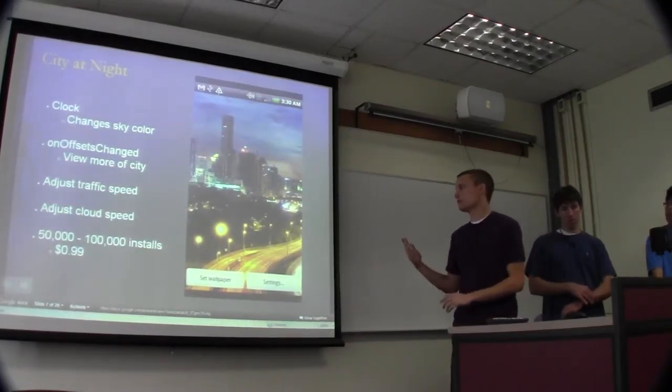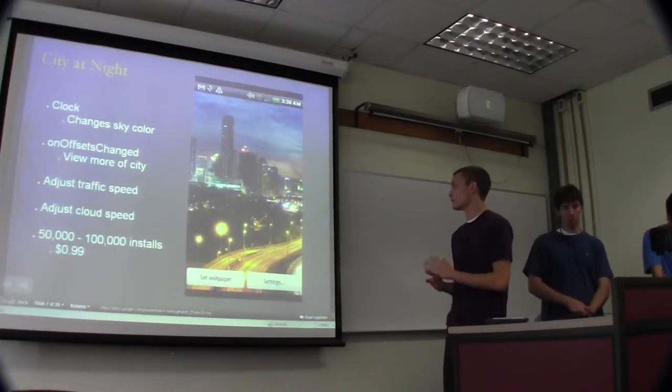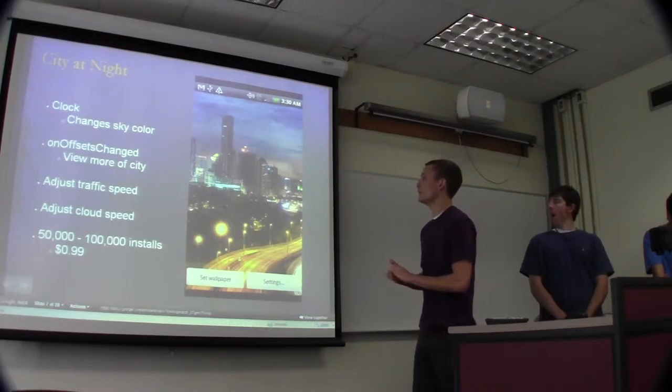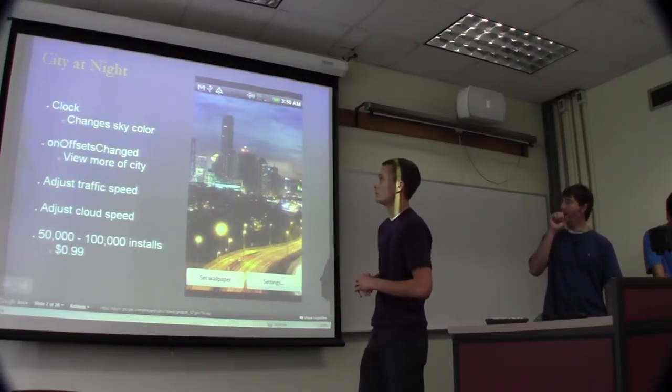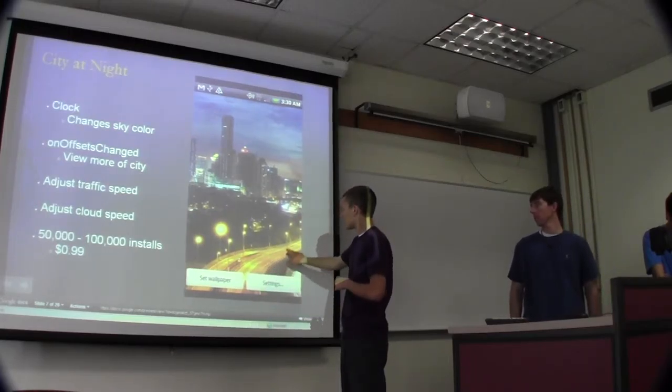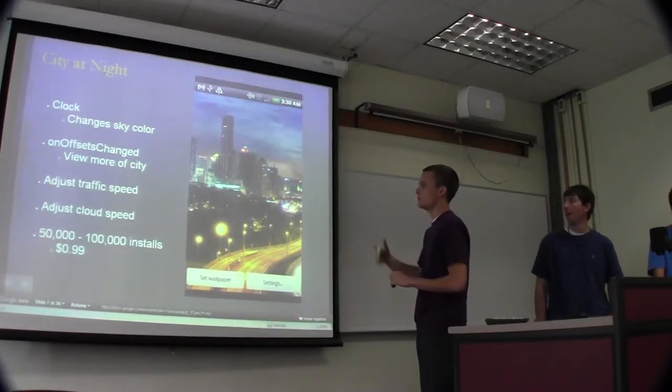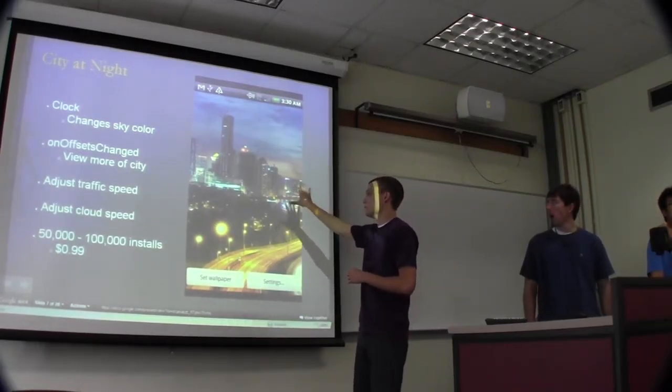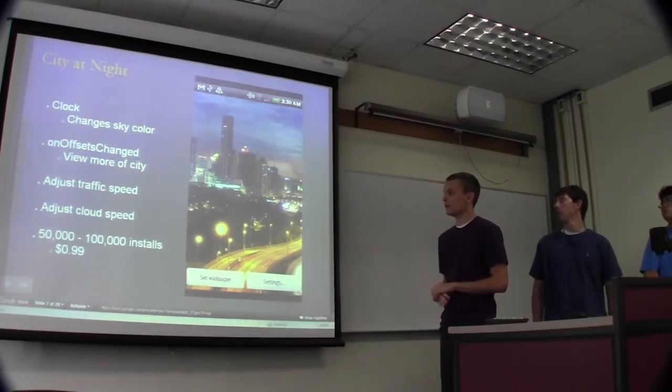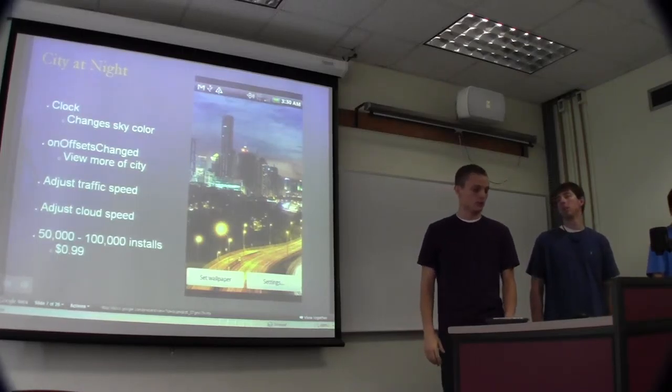So our next application, this one was really simple, but with how many downloads it is and the fact that it costs a dollar, this is something any of us could really implement. Basically it just uses the clock on the phone to change the sky color. The clouds in the background move and there's lights on the street here that show traffic moving. You can adjust the traffic speed, adjust the cloud speed, and again when you swipe you can view more of the city. This is just a really simple wallpaper, but at a dollar and maybe a hundred thousand installs, the developers have done pretty well with it.